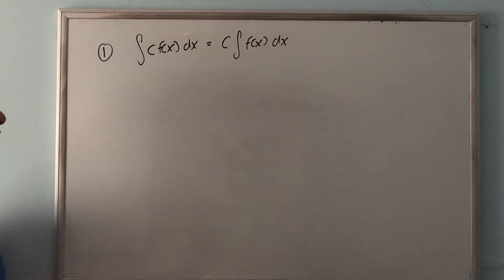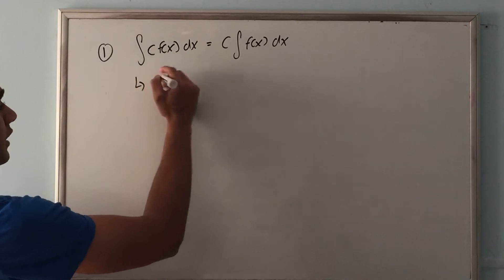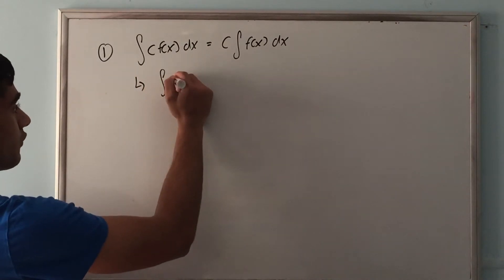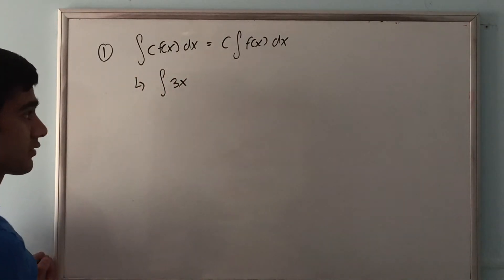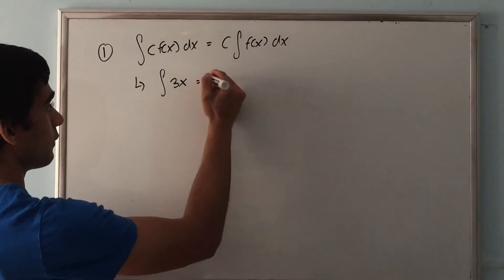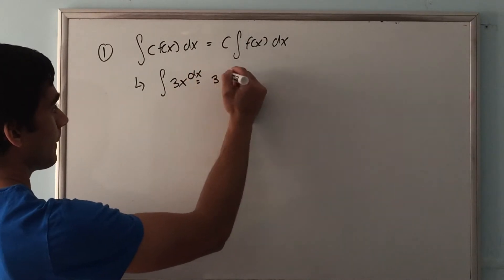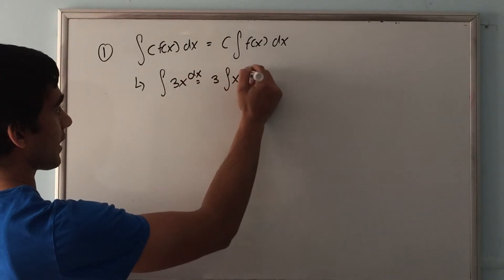It looks something like this: the integral of c times f of x dx equals c times the integral of f of x dx. For example, if you want to find the integral of 3x, the constant is 3, so we can pull out the 3 and just take the integral of x dx.